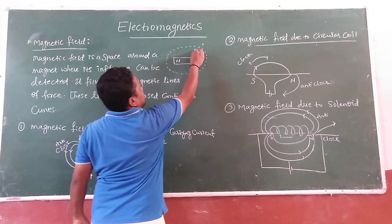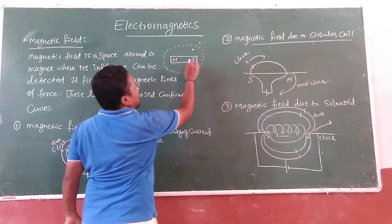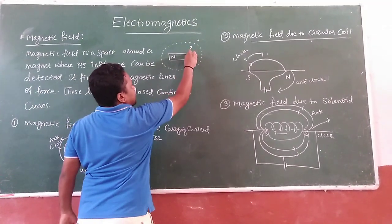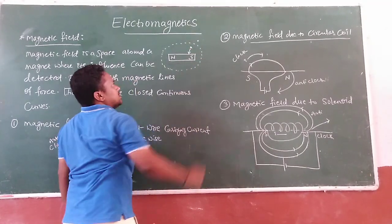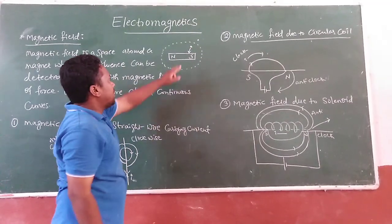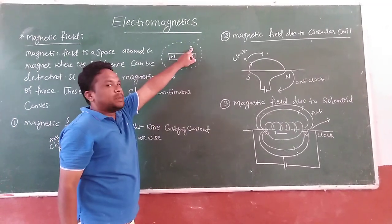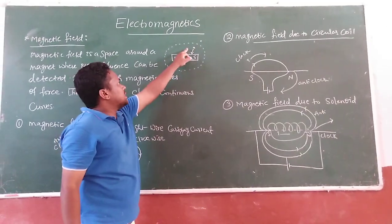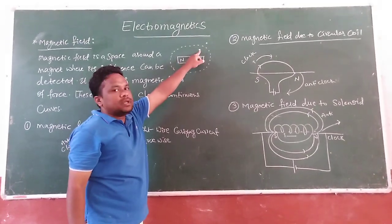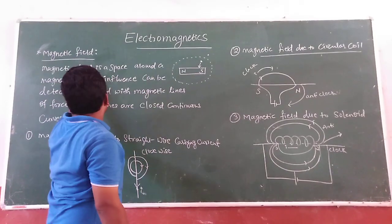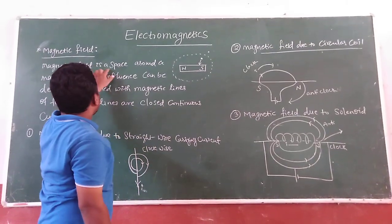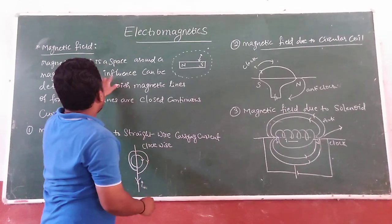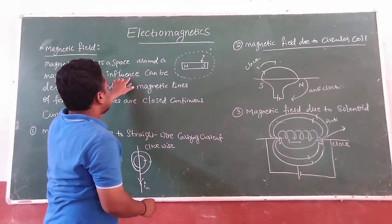Suppose I would like to keep this piece of iron here — what happens? This is attracted by this bar magnet. Why? Because this small piece of iron is present inside the influence area. The magnetic field is a space around a bar magnet where its influence can be detected.